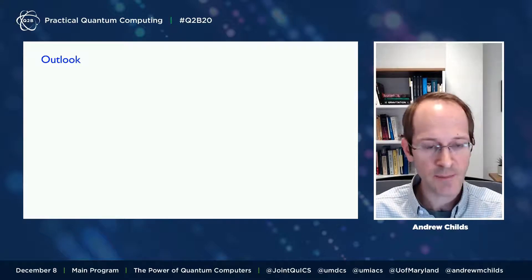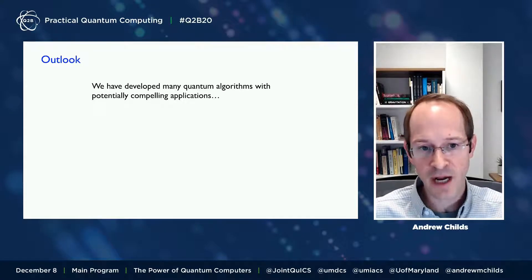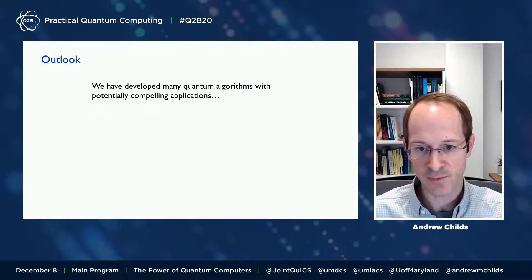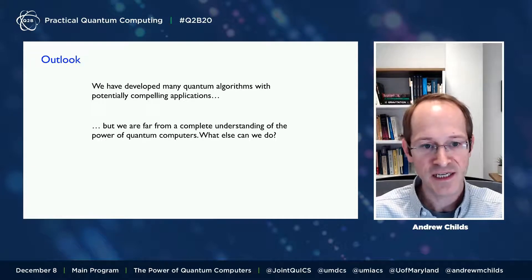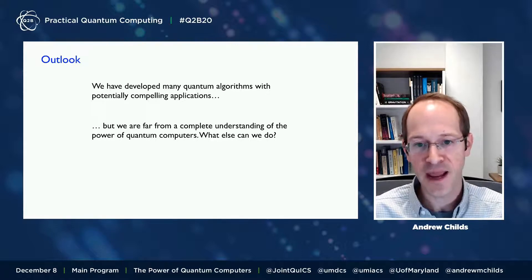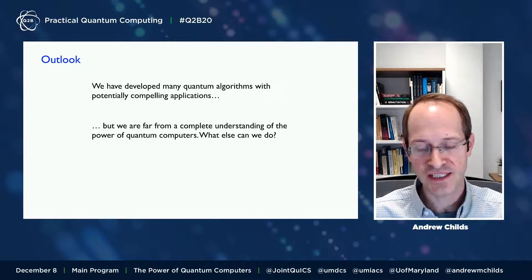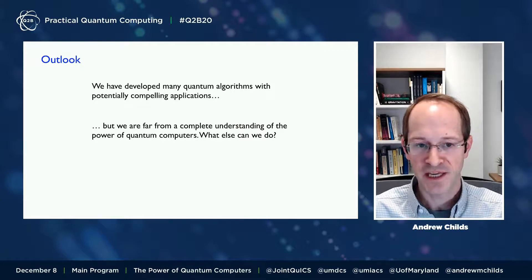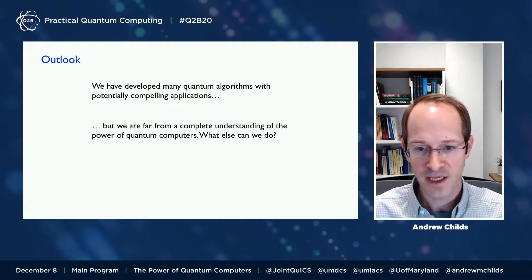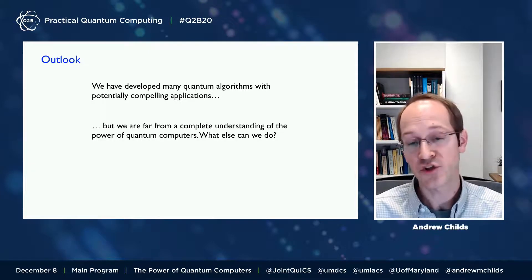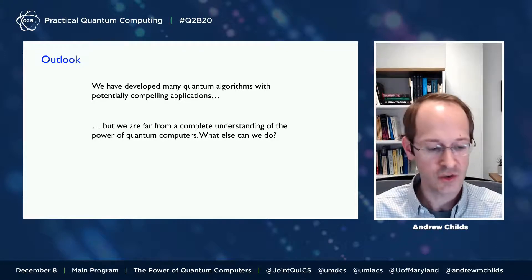To wrap up: we have developed many quantum algorithms with potentially compelling applications — many of which I've talked about today, and many more I haven't had a chance to discuss. But we're still very far from having anything resembling a general understanding of the power of quantum computers. We know many examples suggesting that quantum computers have a lot of computational power, and it's likely that there are other things quantum computers can do efficiently that we don't yet know about. Understanding where the power of quantum computers comes from and what applications they will have is an area of active investigation.